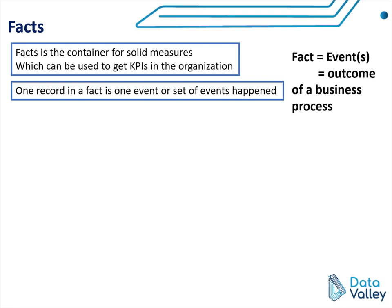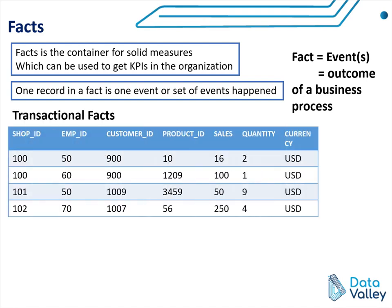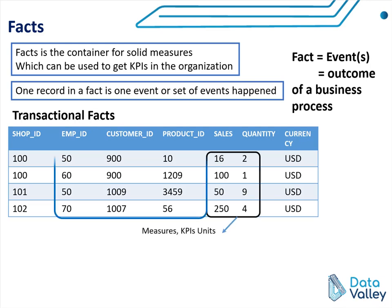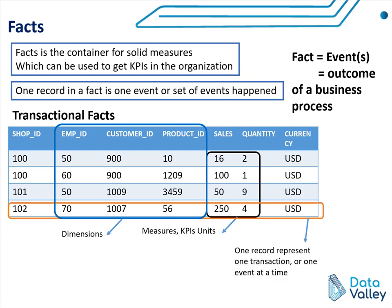Let's now discuss the first type of facts, which is transactional fact. In any fact table, we will have a set of columns representing measures, other columns representing dimensions, and a set of records. In transactional facts, one record represents one transaction or one event at a time. An example is a customer going to a retail shop to buy some items.